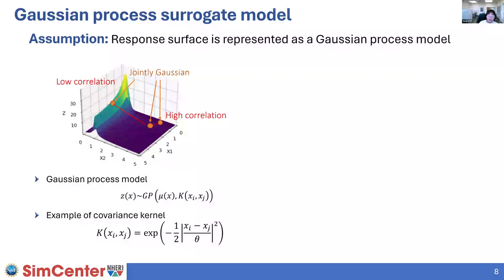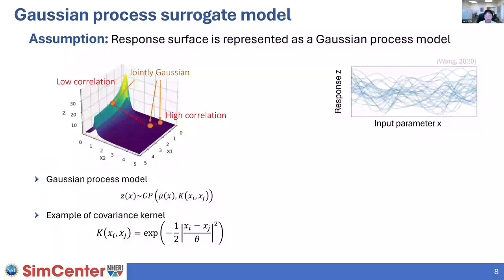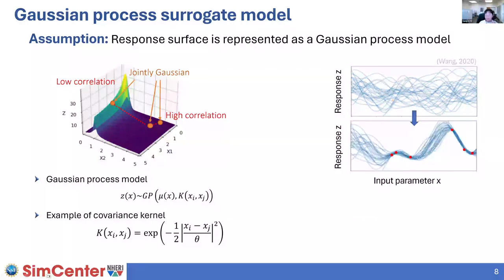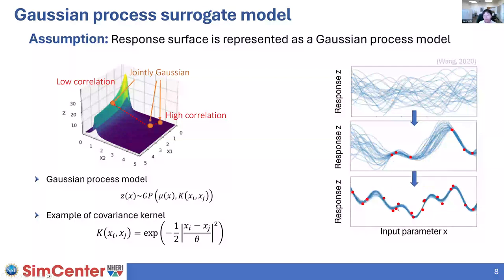Based on this assumption, when we have no observation data there can be many possible function shapes. But as we obtain more and more training data sets from experiments, we get a better idea of the domain close to the observation points. As we get more data, we get better and better predictions across the entire domain, all thanks to our correlation assumption.